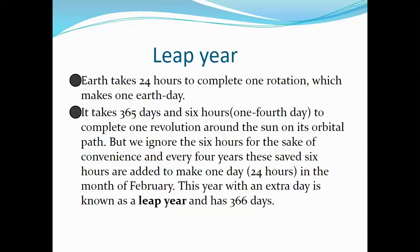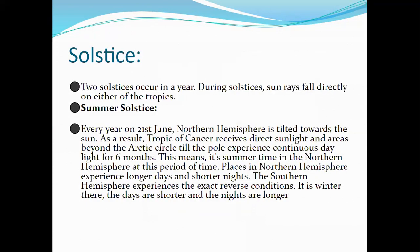This extra day is added in the month of February. The year with an extra day is known as a leap year, and that year has 366 days. Next is the solstice. Solar means Sun. The solar solstice occurs twice a year; during a solstice, sun rays fall directly on either of the tropics.